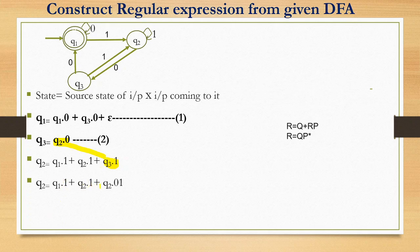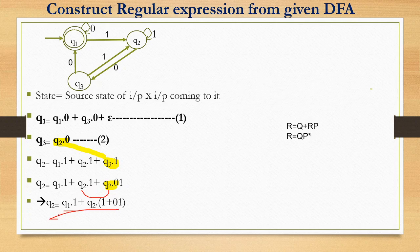Continuing: Q2 equals Q1·1 plus Q2·(1+0)·1, grouping Q2 terms outside. Applying Arden's theorem to Q2: Q is Q1·1, P is (1+0,1). So Q2 equals Q1·1 into (1 plus 0,1) star.